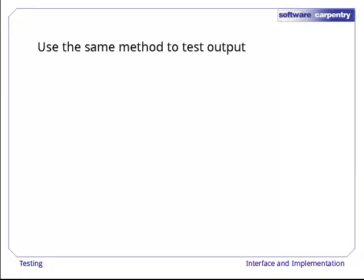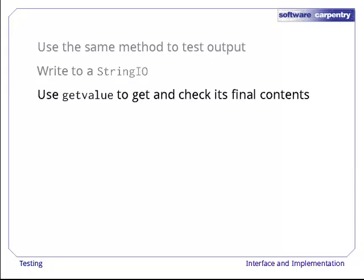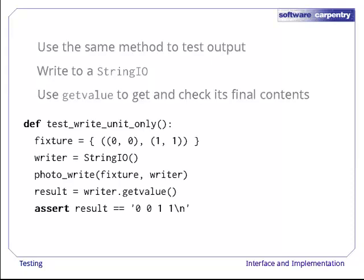We can use this same trick to test functions that are supposed to write to files as well. Instead of opening a file, filling it, and closing it, we create a StringIO object and write to that. We then use StringIO's GetValue method, one of the few things it has that real files don't, to get back the text we've written and check that it's correct.